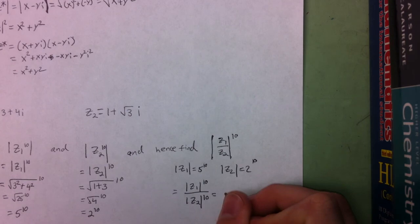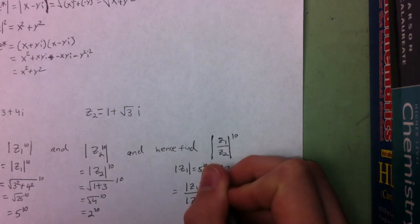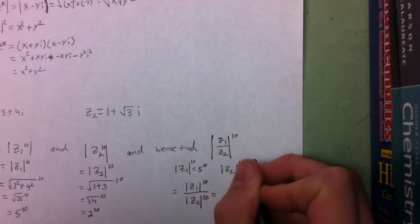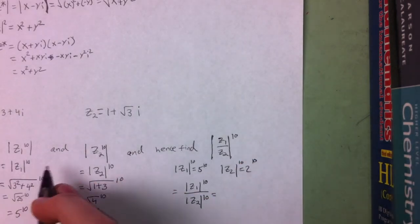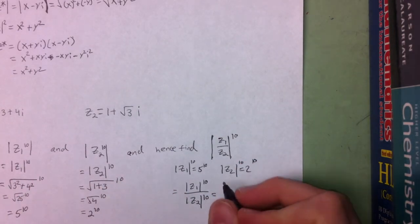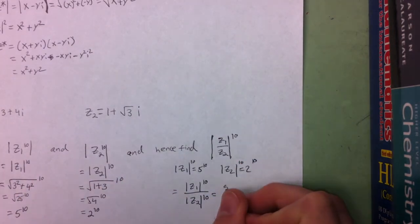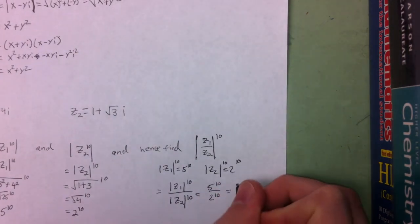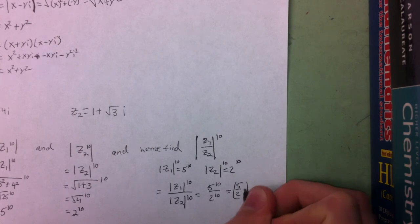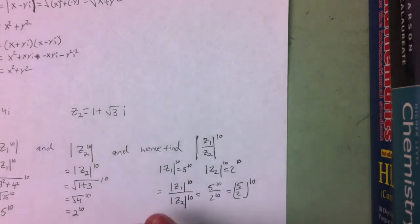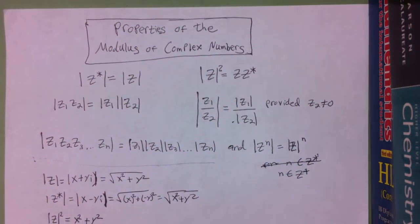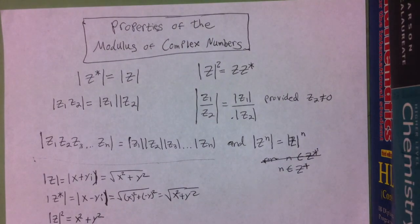So that gives us 5 to the 10th divided by 2 to the 10th, which is 5 halves to the 10th power. These are the main properties for the modulus of a complex number that you need to know.